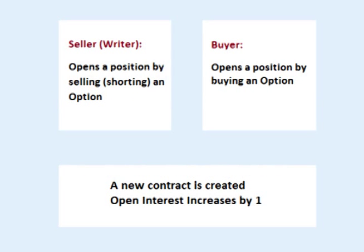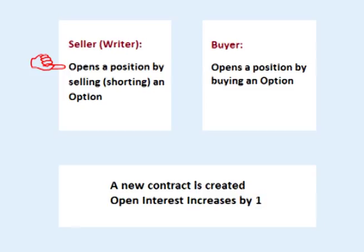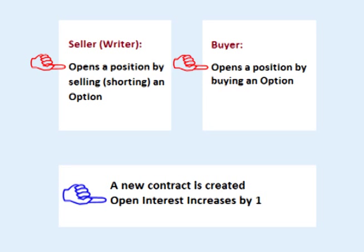Let's take a closer look. A new contract is created when an option seller decides to sell, also called write a contract, and a buyer buys it. In other words, the seller sells or shorts to open and the buyer buys to open. This creates a new contract and Open Interest for that strike price increases by one.